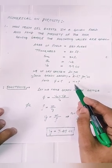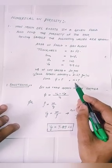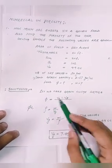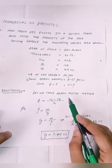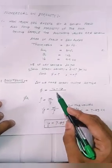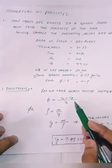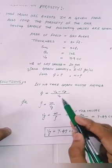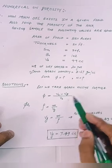Weight of dry sample 20 grams, sand grain density 2.67 grams per cc. Find porosity and how much oil exists in given field. So solution is, let me take grain volume formula: phi equals VB minus VG upon VB.